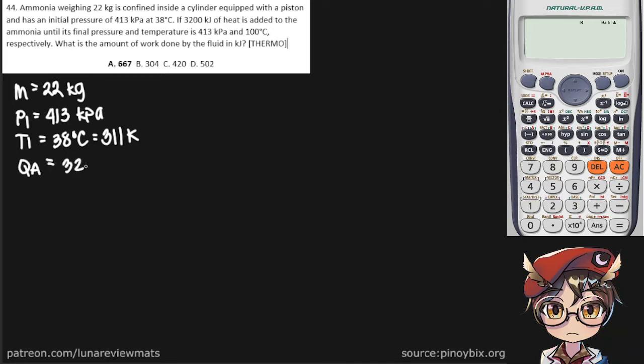so it's just the same as the initial pressure of 413 and a temperature, a final temperature of 100 C or 373 kelvin respectively. What is the amount of work done by the fluid in kilojoules? So we're trying to find work here in kilojoules.